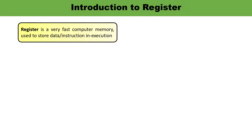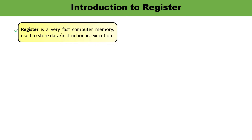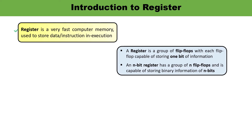First, let us understand what is a register and what is the use of a register. A register is a very fast computer memory which is used to store data or instructions in execution. Whenever required, you can store and retrieve information. A register is constructed using flip-flops. An n-bit register has a group of n flip-flops and is capable of storing n bits of binary information.